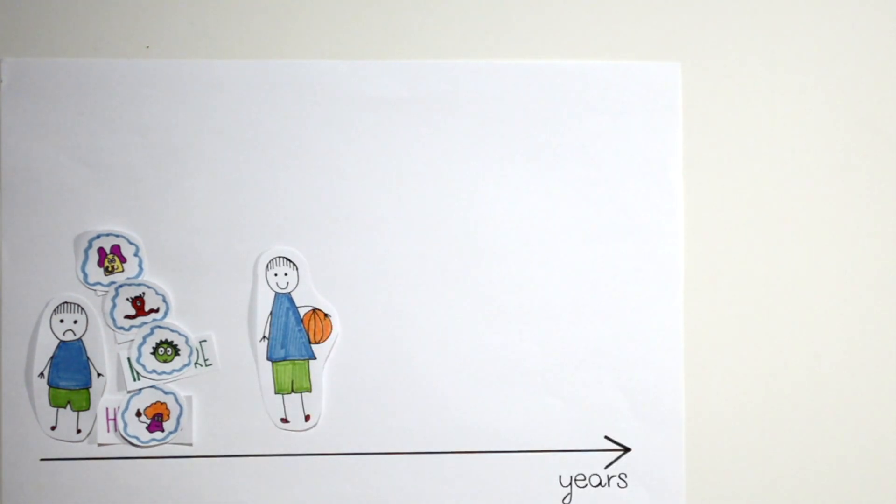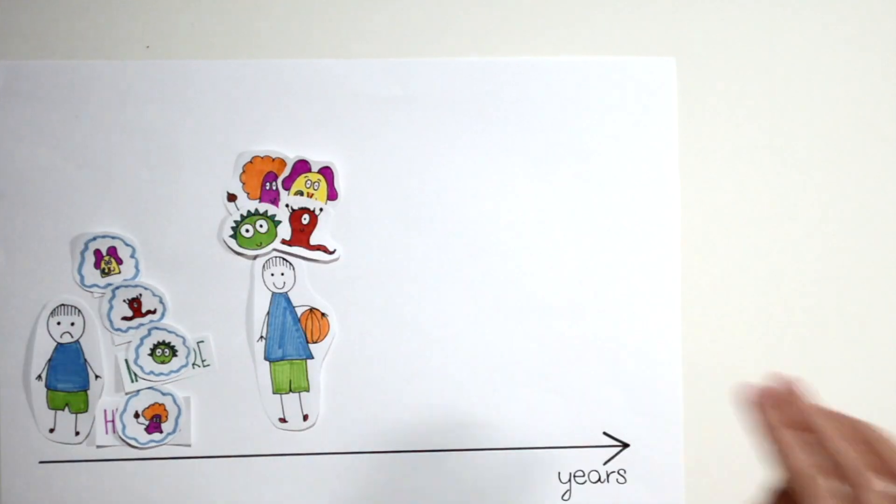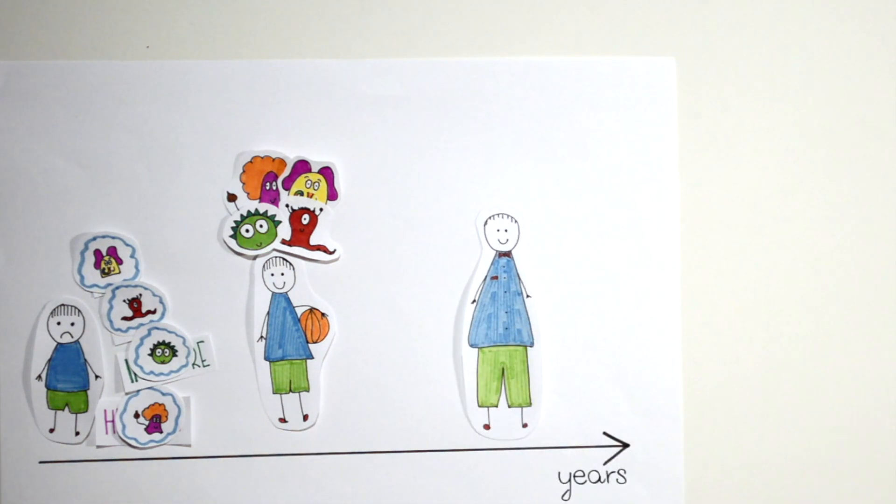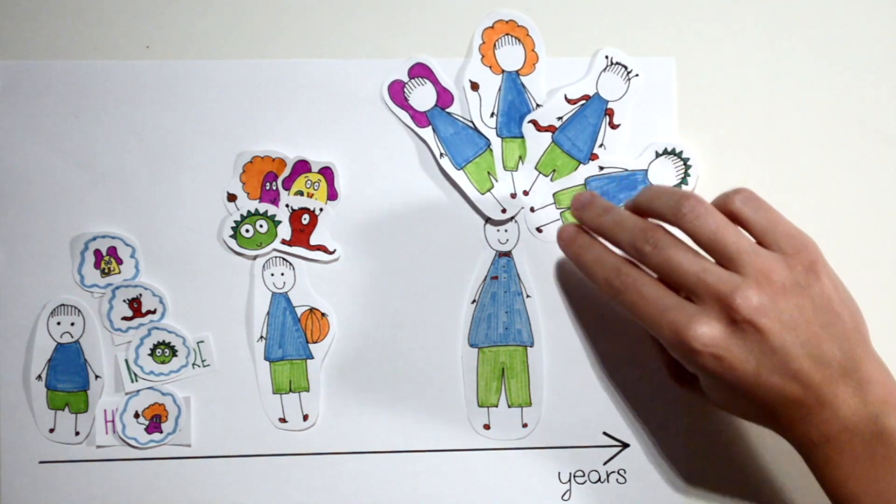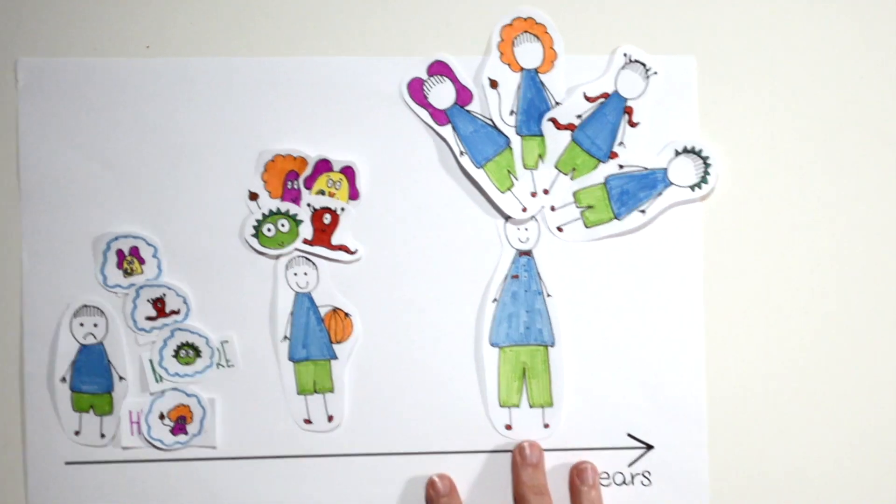When Jacob grows up, his imaginary companions will still stay with him. Jacob's imaginary companions are transformed during adolescence into distinct personalities with their own identities. As an adult, Jacob will be surrounded by his autonomous alter egos, the imaginary companions who made it through the transformation process.